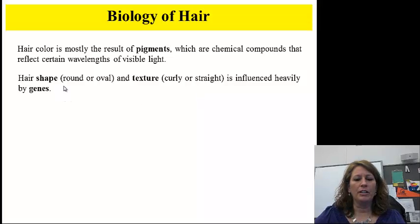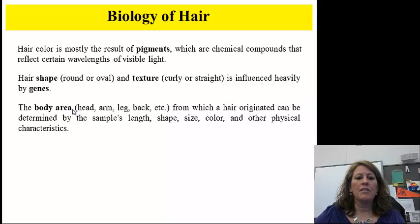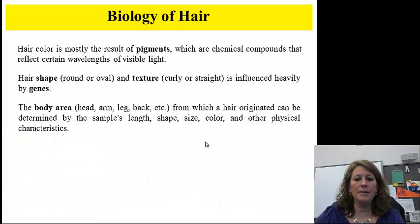When you talk about the shape of the hair and you look under the microscope, it can be round or oval. This is a consistent round or oval texture, curly or straight, and that's determined by genes. As far as the body area where all the hair is found—the head, the arm, the leg, and the back—a scientist can tell by the shape, the length, the color, and some other physical characteristics where it comes from on the body.